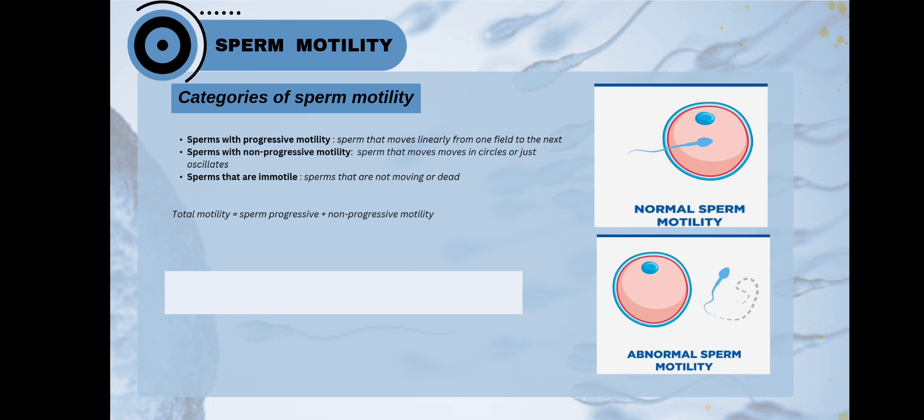The first category is sperm with progressive motility. Sperm with progressive motility means the sperms are moving straight from one field to the other. Second, sperm with non-progressive motility means the sperms are moving but just oscillating from one place to other, not going straight. And the third category is sperms that are immotile, means the sperms are almost dead. They don't do any movements.